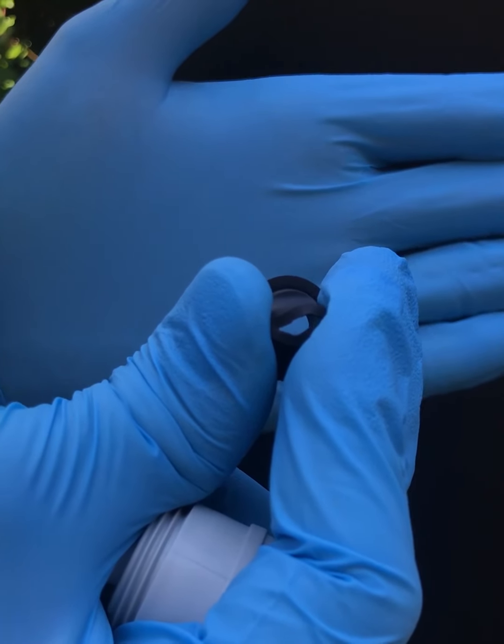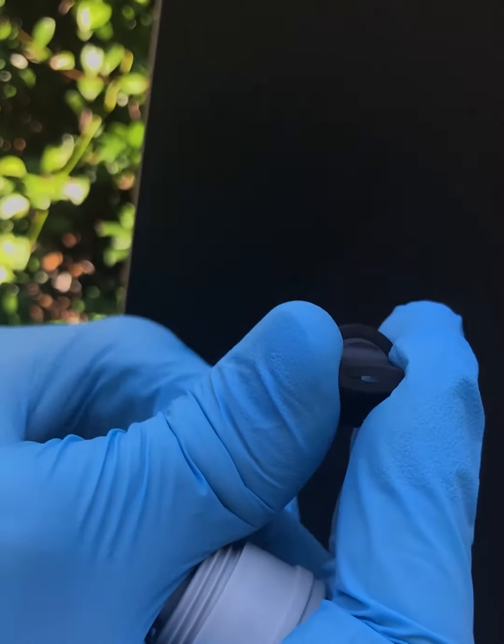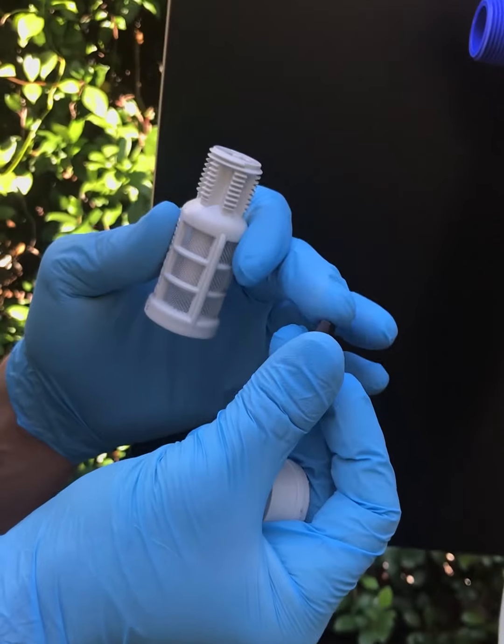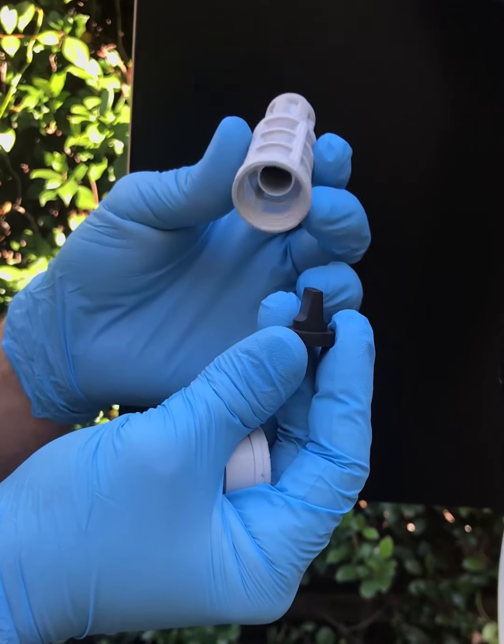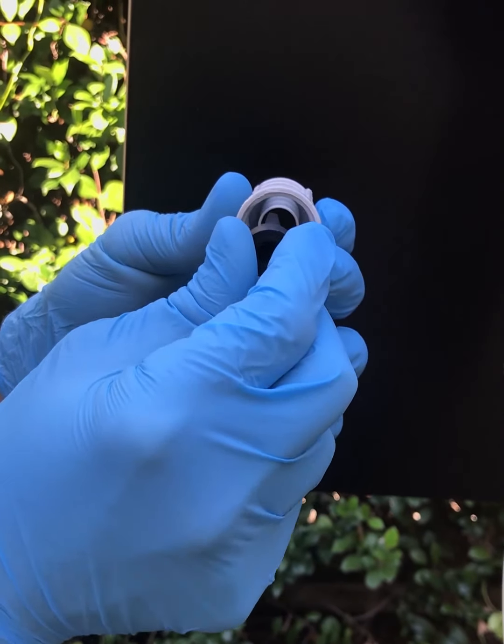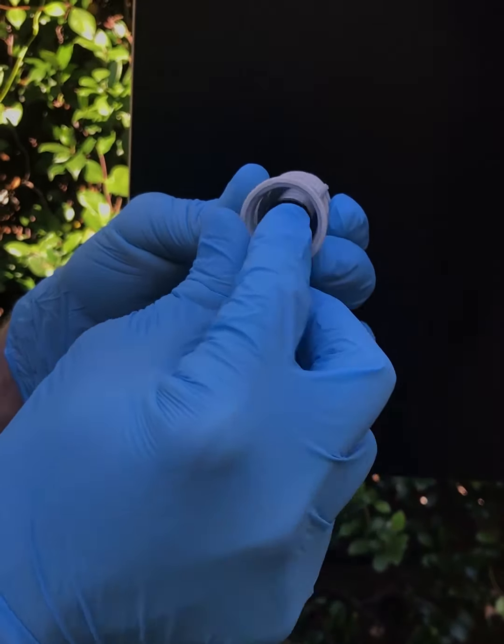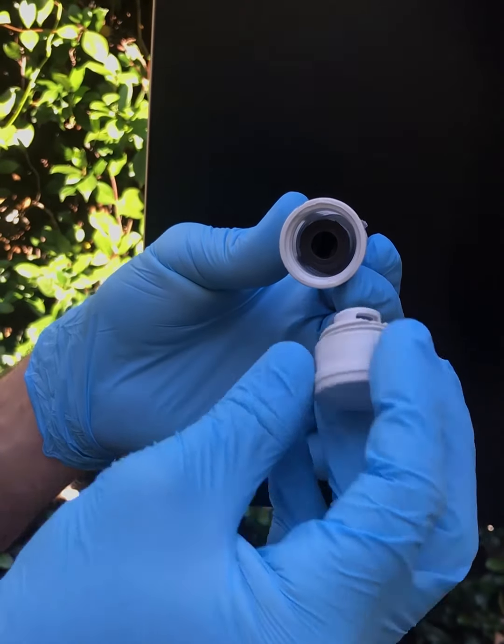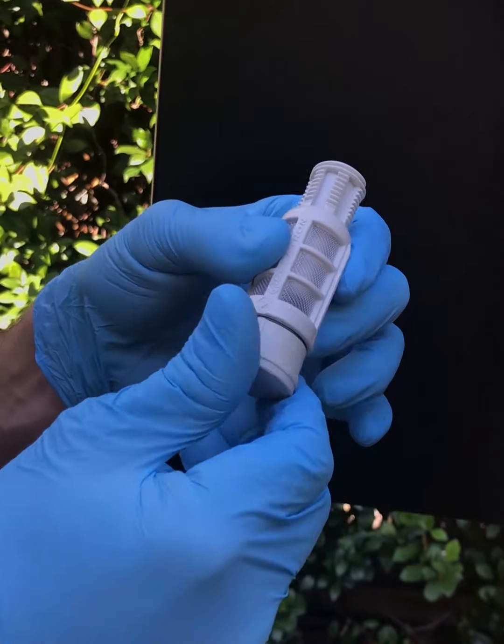After you've rinsed it with fresh water, go ahead and reinstall the duck bill seal by placing the tapered end into the small opening in the bottom of your strainer assembly. Then thread the weighted portion onto the bottom and tighten it hand tight.